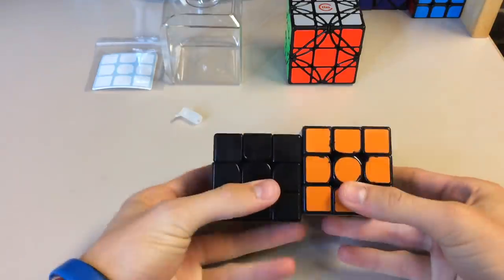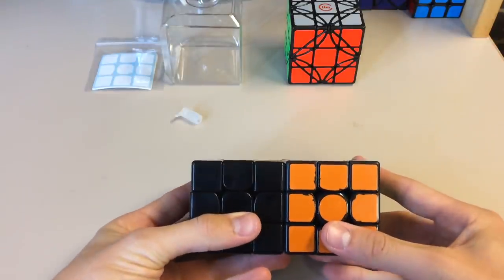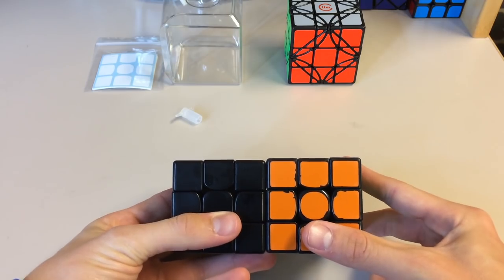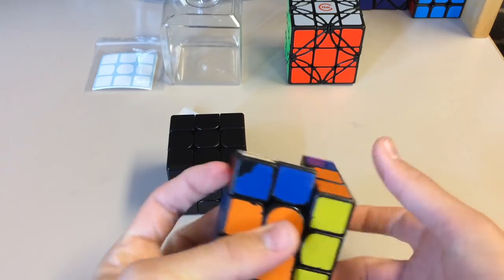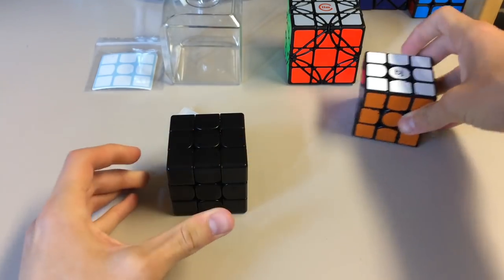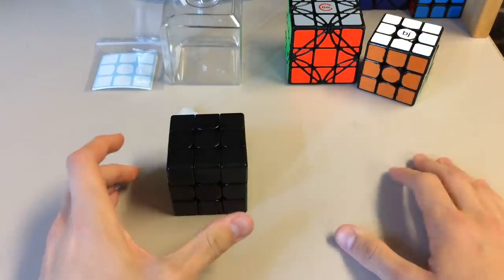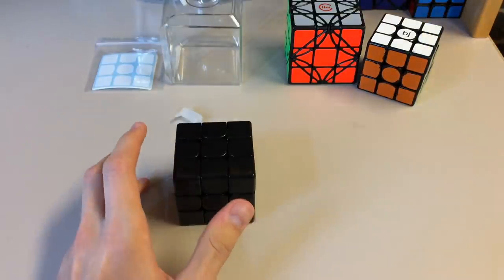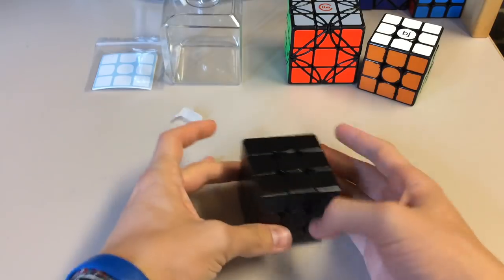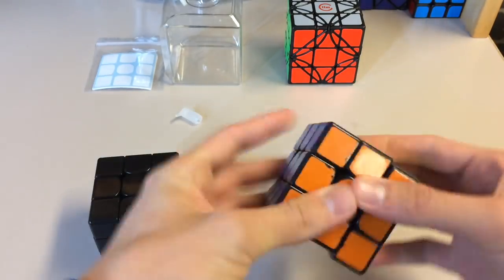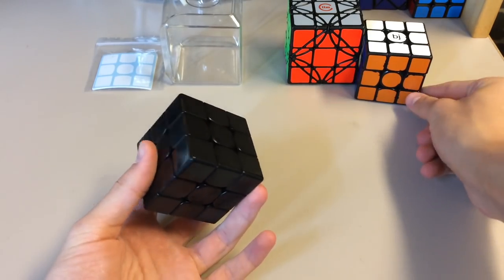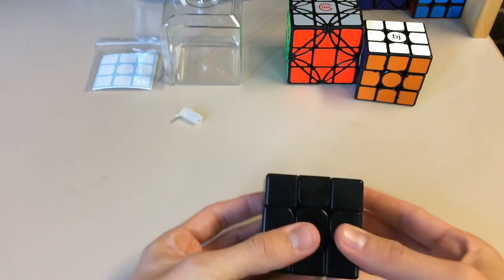Alright, so here is my Gans 357 next to the 356. So you can see a small size difference, just a millimeter. And this was my main for about a year. It's my backup now. I haven't really done a lot of solves with it. So that might be why I haven't really been liking it as much as the Hualong, which I've been solving a lot. Anyways, this feels kind of small compared to this. Even though it's just a one millimeter difference, it still makes a difference.